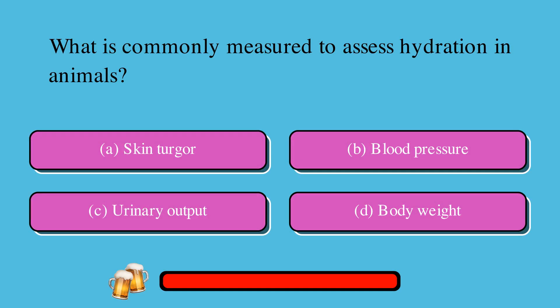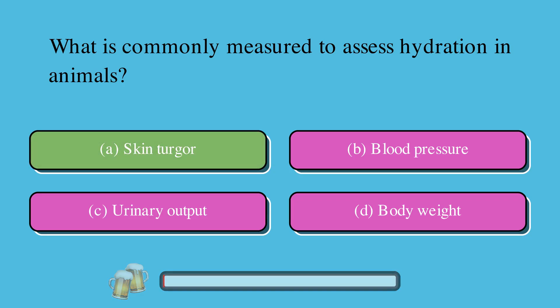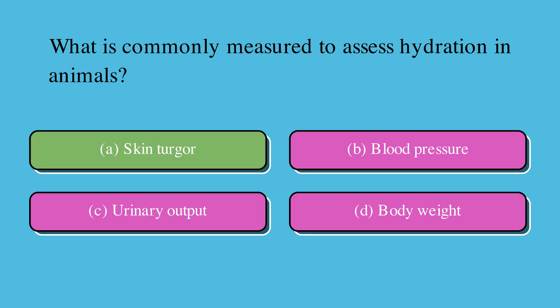What is commonly measured to assess hydration in animals? A. Skin turgor, B. Blood pressure, C. Urinary output, or D. Body weight. The correct answer is A. Skin turgor.